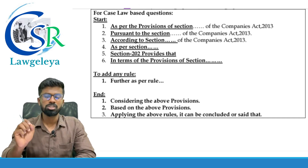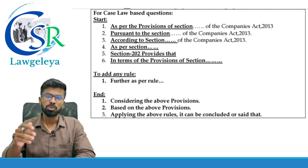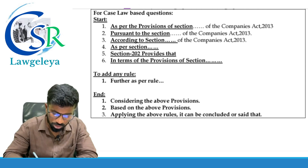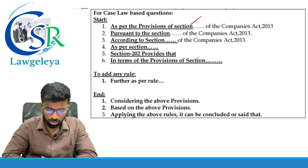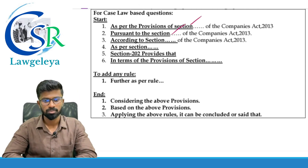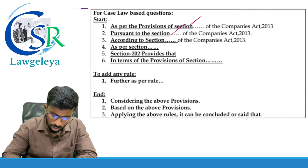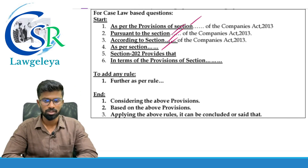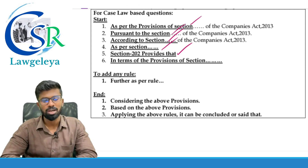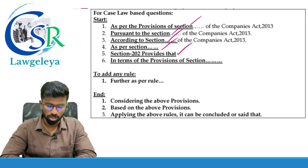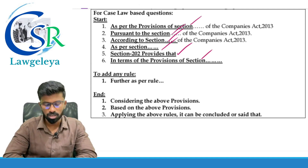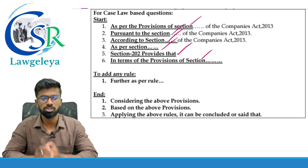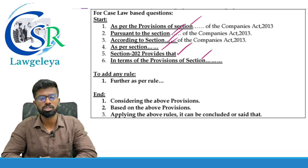To start the provisions of the act in Part 1, you can use any of these six phrases: first, 'as per the provision of the section'; second, 'pursuant to the section'; third, 'according to the section'; fourth, 'as per the section'; fifth, 'section provides'; and sixth, 'in terms of the provisions of the section'.